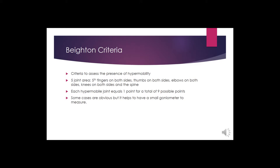A key set of criteria used to determine hypermobility is the Beighton criteria. This assesses hypermobility across five joint areas: the fifth fingers on both sides, both thumbs, both elbows, both knees, and the spine — for a total of nine possible points. Each hypermobile joint equals one point. Some cases are obvious, but using a small goniometer to measure joints can give more confidence in your objective assessment.